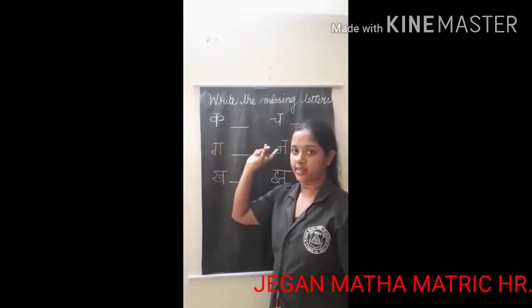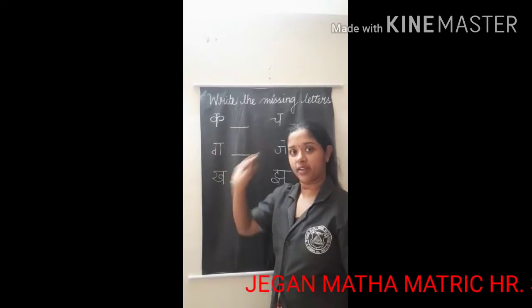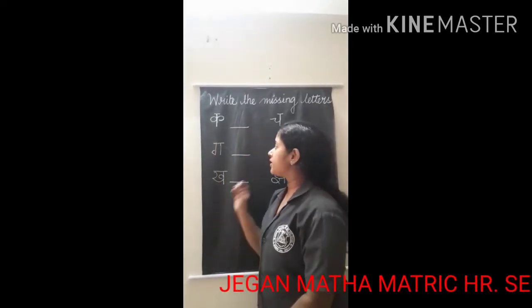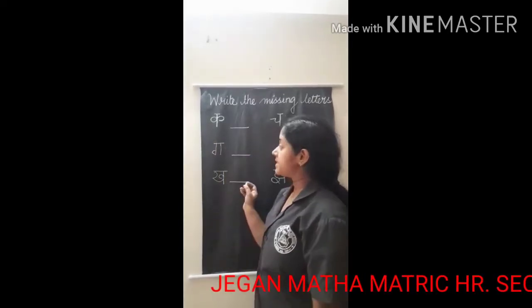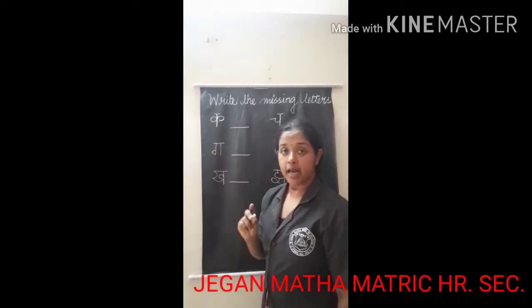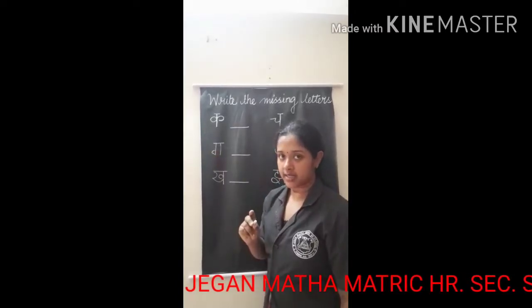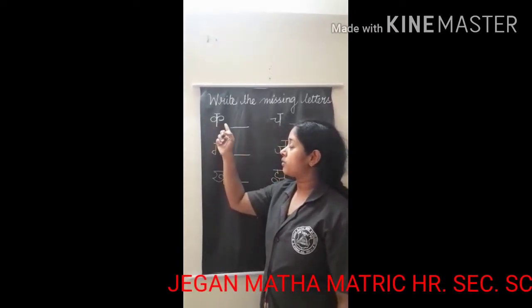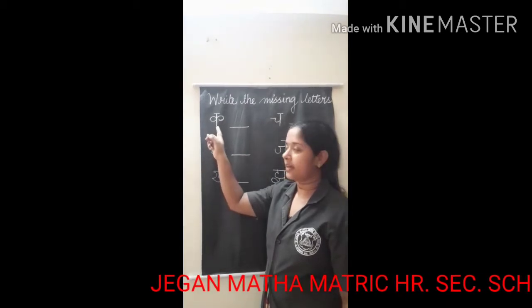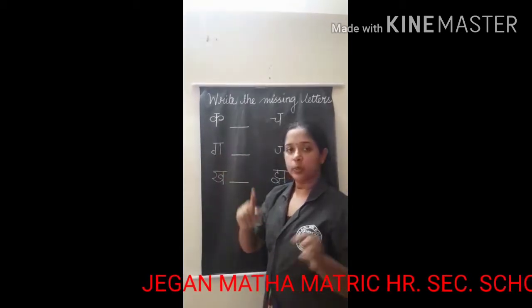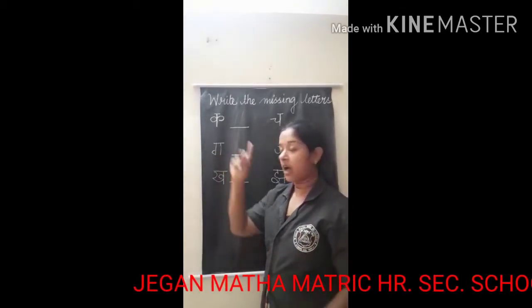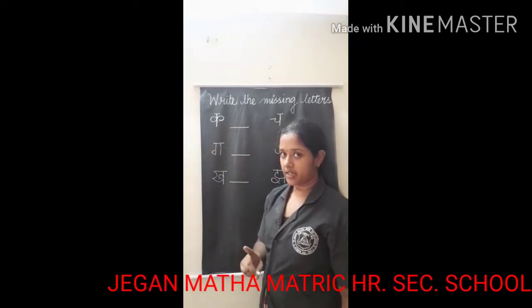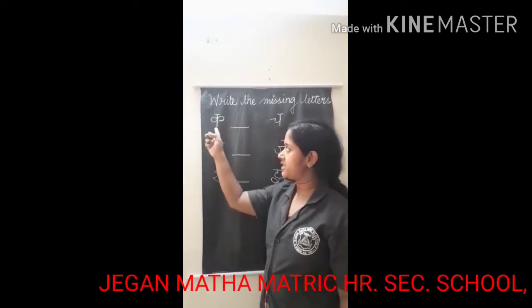We have to fill in the blanks by writing the next consonant after each given consonant. Let's start. The first consonant is KA (क).